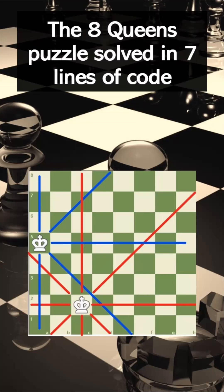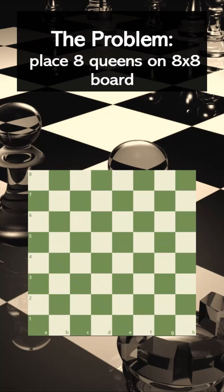How to solve the 8 queens problem with only 7 lines of code. The 8 queens problem is a classic puzzle where on an 8x8 chessboard, 8 queens have to be placed so no 2 queens threaten each other.